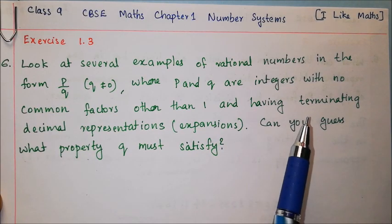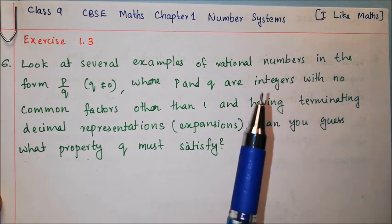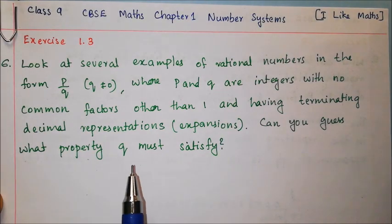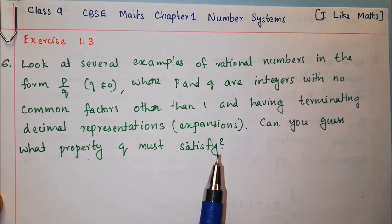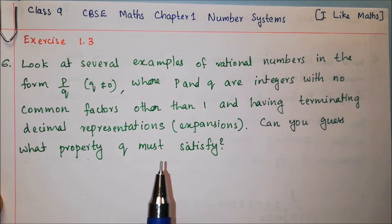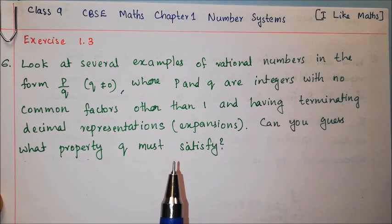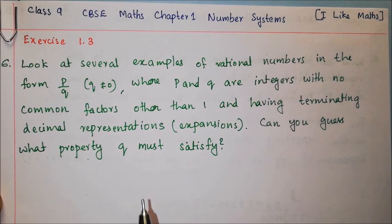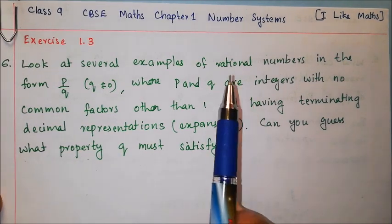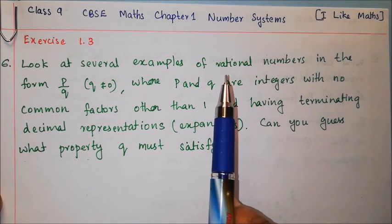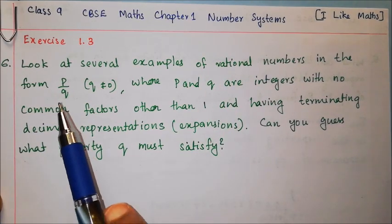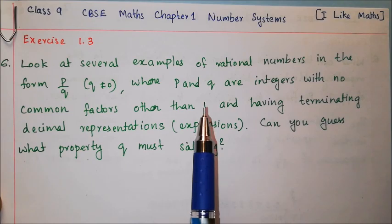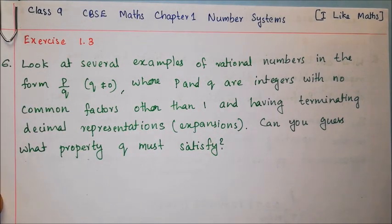So we have rational numbers of this type where we look at the denominator and its property. We can see how terminating rational numbers work by examining their denominators.